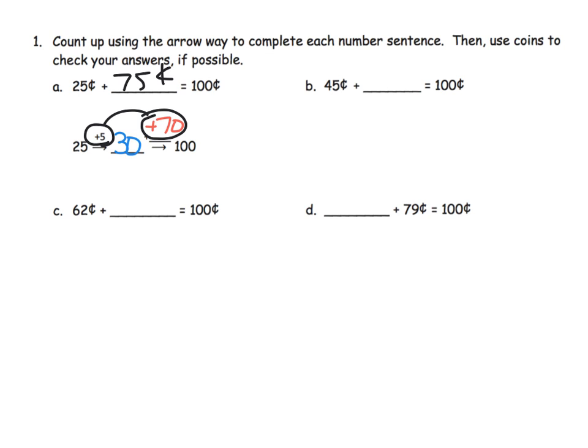If we're going to start with 79 cents, what do we need to add? We could add 1 and that gives us 80, then add 20 and that gets us to 100. So our total that we added is 21 cents, and that's the arrow method.